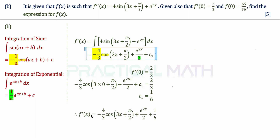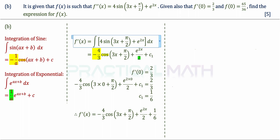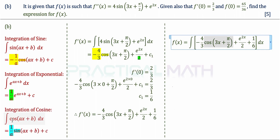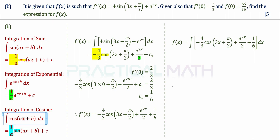The result for f prime of x is: negative 4/3 cos(3x + π/2) plus 1/2 e to the power of 2x plus 1 over 6. Before integrating again, we revisit the integration of a cosine function: integrating cos(ax + b) dx gives sin(ax + b) divided by a, plus c. This is similar to integrating a sine function.